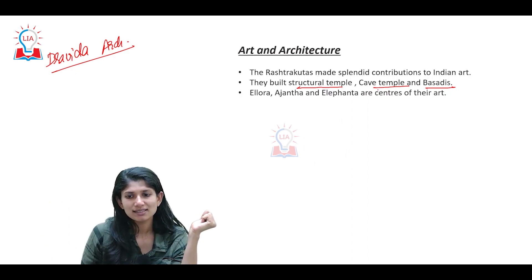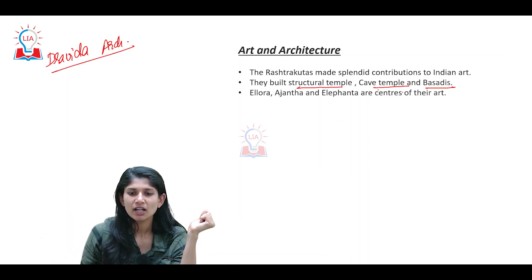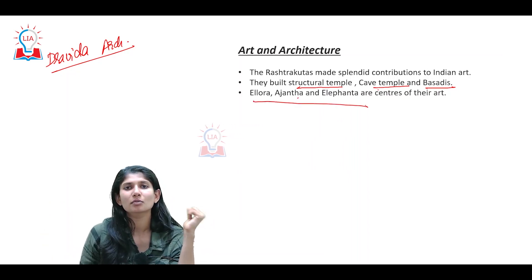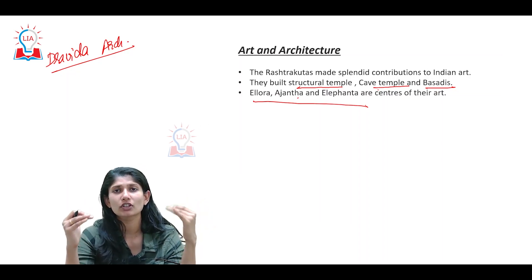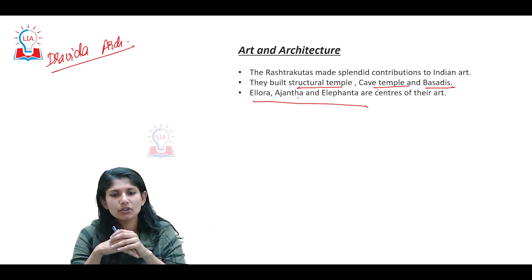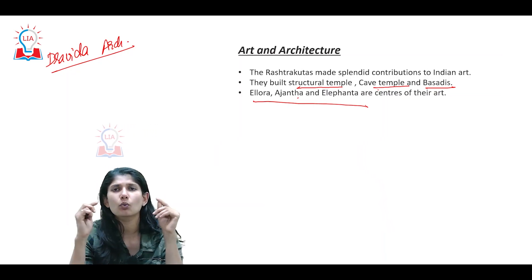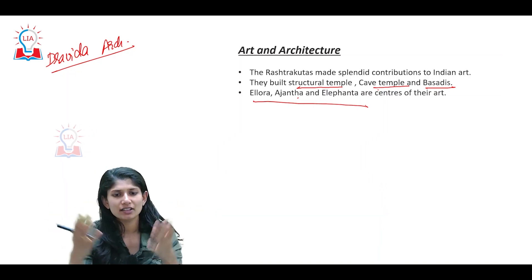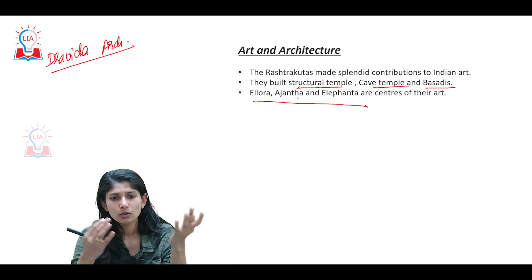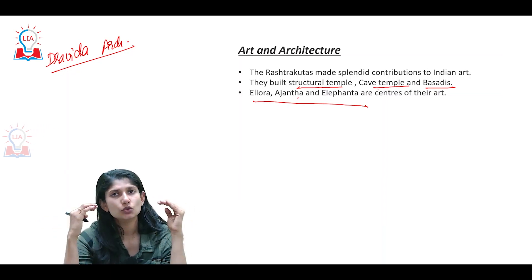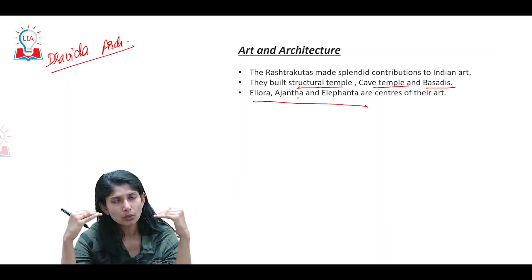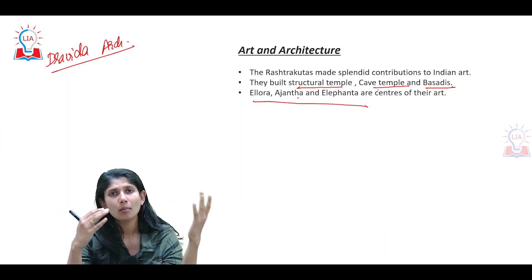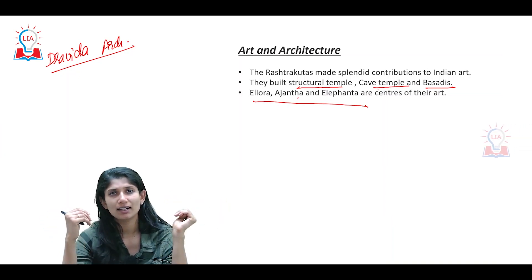They built structural temples, cave temples, and basdhis. Ellora, Ajanta, and Elephanta are the most important places attributed to the Rashtrakutas. One important thing to note is that it is not just one particular kingdom that can take credit — throughout the period of time, throughout various empires, they added considerable contributions to these architectures.